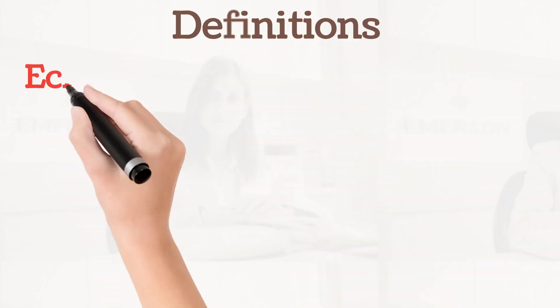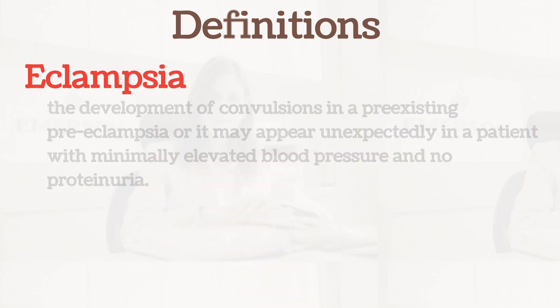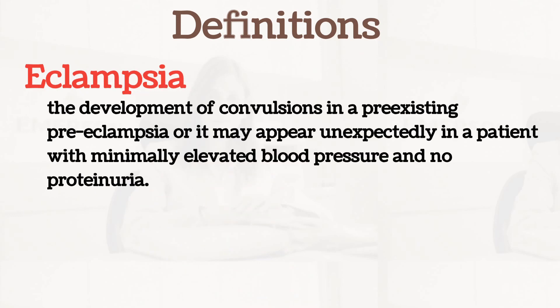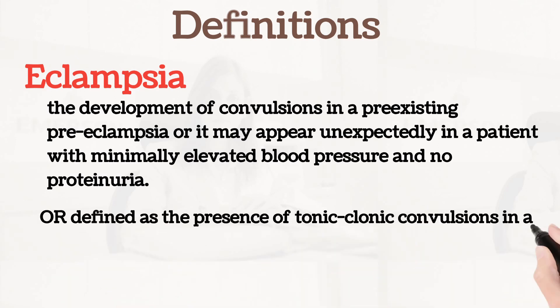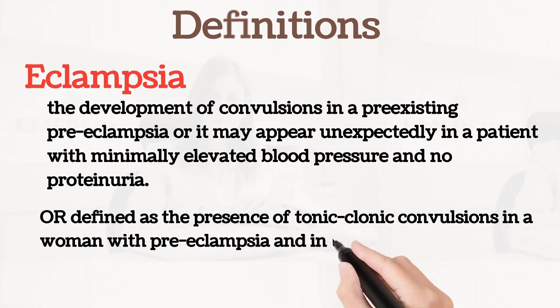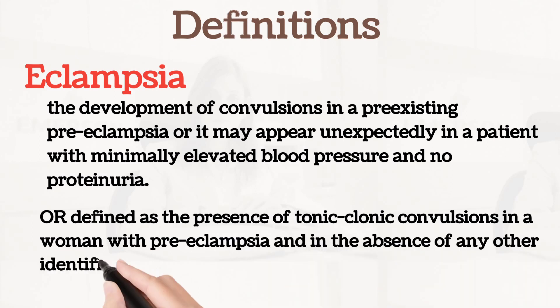The definition for eclampsia is the development of convulsions in a patient with pre-existing pre-eclampsia, or it may appear unexpectedly in a patient with minimally elevated blood pressure and no proteinuria. You can also define it as the presence of tonic-clonic convulsions in a woman with pre-eclampsia in the absence of any other identifiable cause. So those are the definitions for all the classifications.